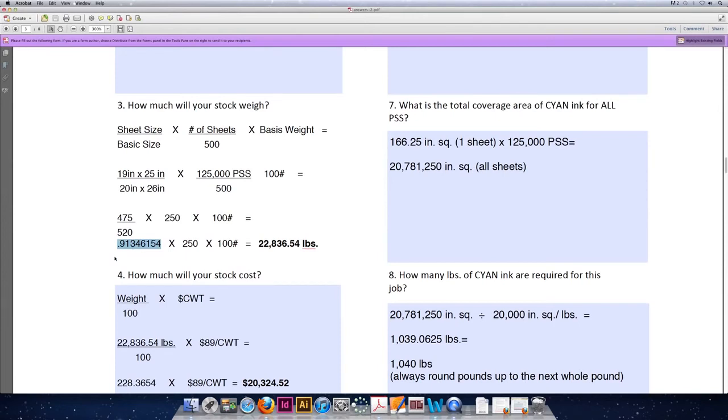So with 0.91346154 in the calculator, we'll multiply times 250 and times 100, and the total weight for our stock is 22,836.54 pounds. When you come up with the weight of your stock, you're always going to round two decimal places.